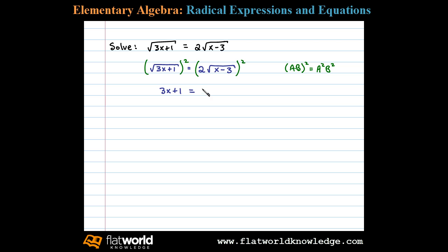When I square 2, I'll be left with 4, and when I square this square root, we'll be left with the argument x minus 3. Notice I took care to place that in parentheses; we will have to distribute this 4.